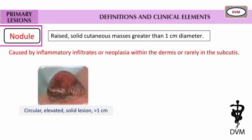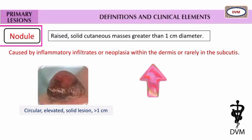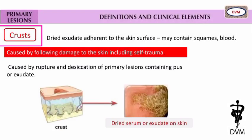What is nodule skin lesion? It is raised, solid, cutaneous masses greater than 1 cm diameter. These are caused by inflammatory infiltrates or neoplasia within the dermis, or rarely in the subcutis. See the circular, solid, elevated skin lesion here — circular, elevated, solid lesion at 1 cm.